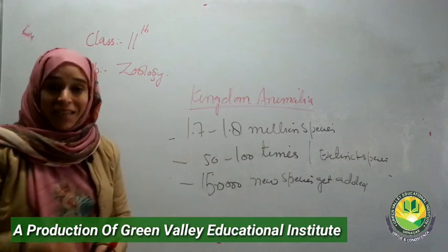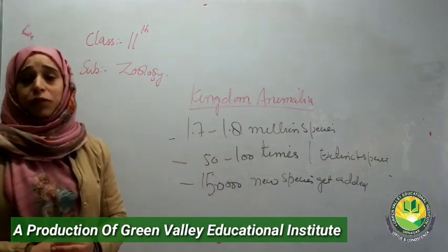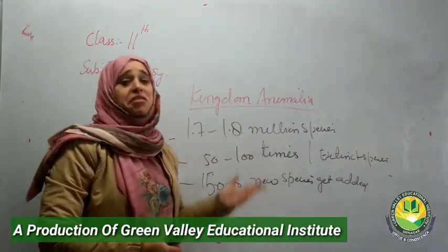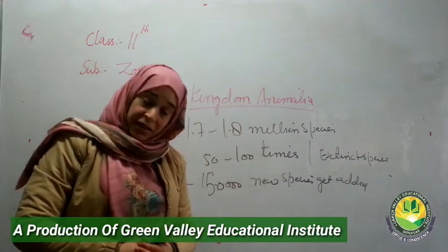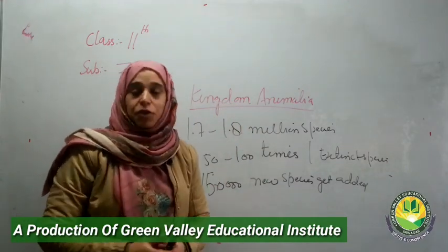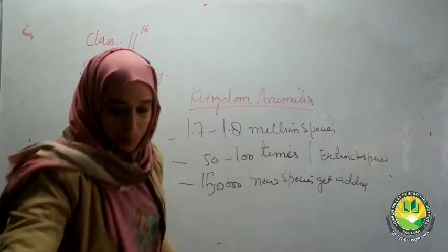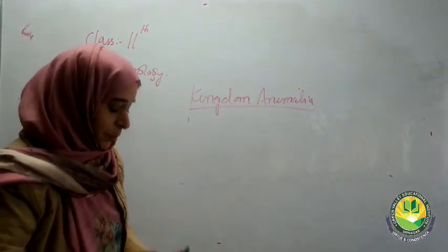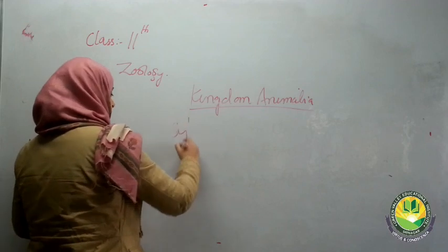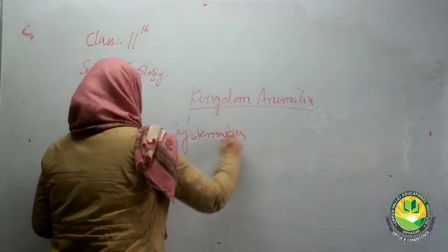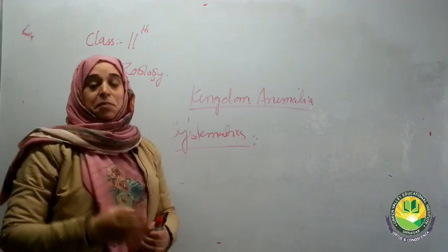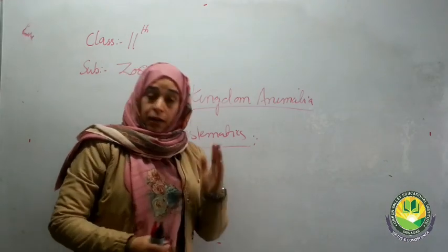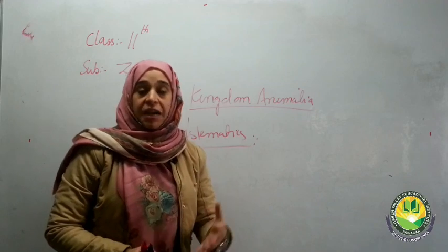In order to study this huge number of organisms, there should be a specific branch of biology that deals with the identification, comparison, and study of all these organisms. And yes, that branch of biology exists and it is known as Systematics. Systematics is the branch of biology which deals with cataloguing organisms into categories that can be named, remembered, and identified.